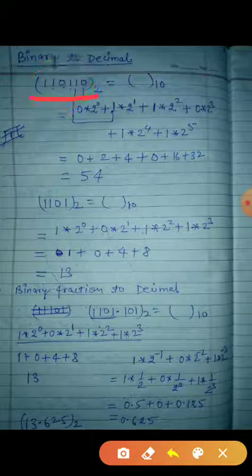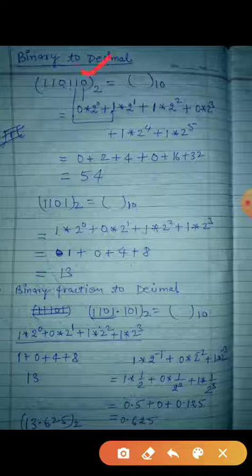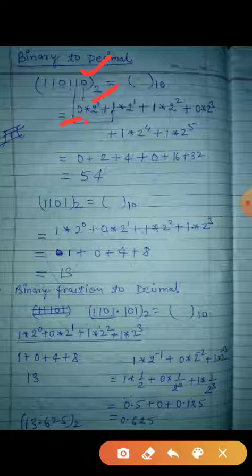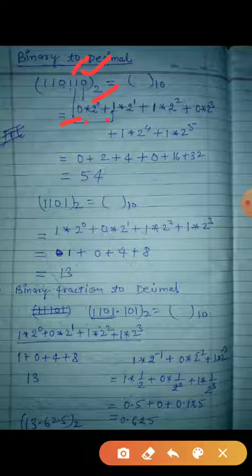So how will you convert this one? First of all, take the first number from the right side. The first digit is 0. Write 0 and multiply with 2 to the power 0. Always you will start from 2 to the power 0. Then plus — take the next digit. The next digit is 1: 1 into 2 to the power 1. You will increase the power.